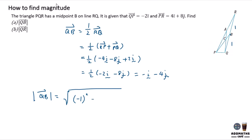Then you square it, plus the value of j, which is negative 4, you square it, and you will have 1 plus 16. The final answer is square root 17, and the magnitude is distance, so you have to write units. This is the magnitude.